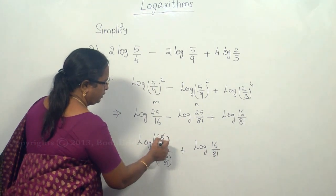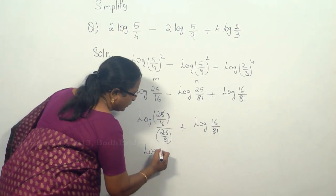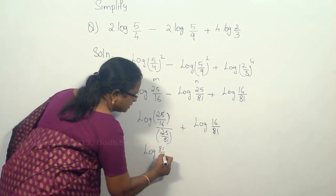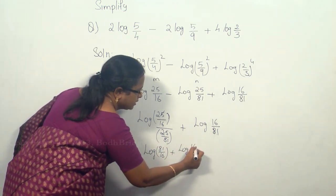So here this 25 and 25 will get cancelled and finally what you have is log of 81/16 plus log of 81.